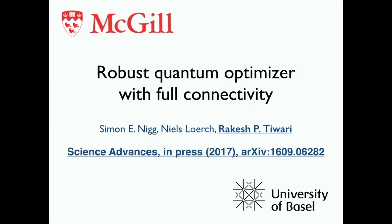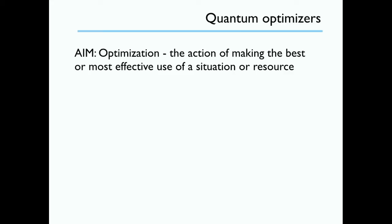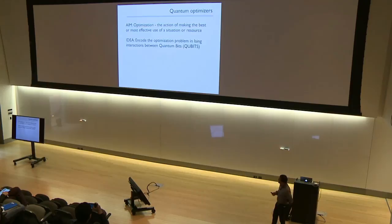Let me start with the motivation of quantum optimizers. The aim of quantum optimizers is to optimize. Optimization is simply the action of making the best use of resources or making the best of a situation, and we would like to optimize most of our tasks. The goal is to map this optimization problem to a computational problem that can itself be mapped to Ising interactions between quantum bits.